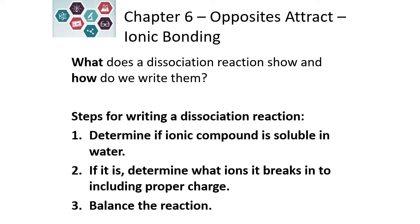The steps for writing a dissociation reaction: First, we need to figure out if our ionic compound is soluble in water by looking at our solubility rules. Once we know that it is soluble, we determine what ions it breaks into, including their proper charge. Remember that polyatomic ions will stay together as a unit — they do not break apart further. Then we balance the reaction to make sure that the elements are balanced, as well as the overall charge in the chemical reaction.